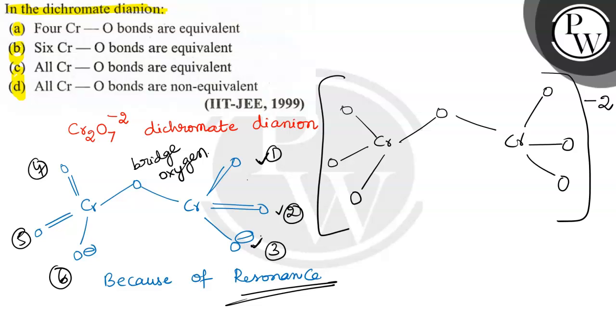So six Cr-O bonds are equivalent due to resonance. Option B is the correct answer.